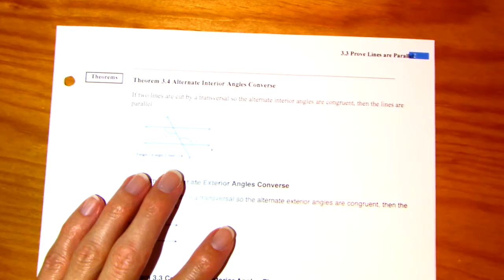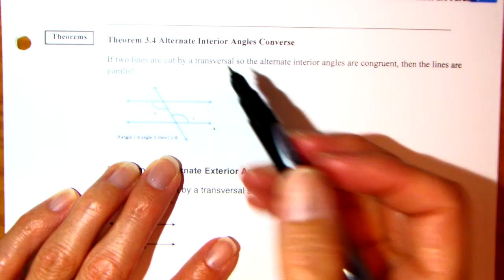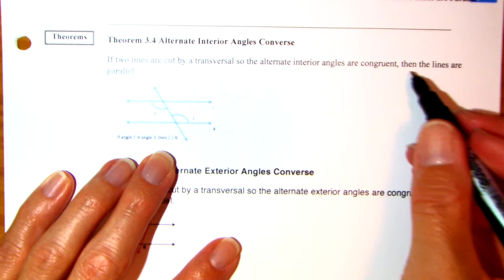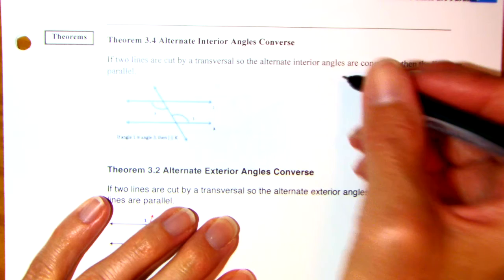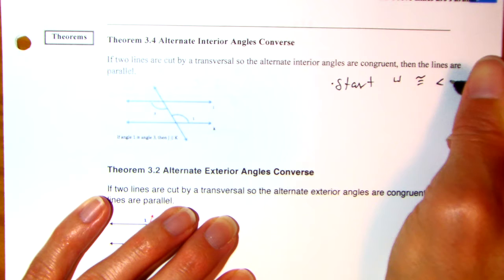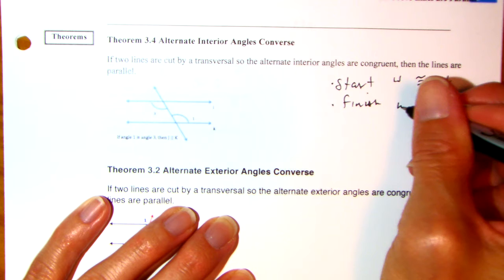More converse theorems. Again, we're going to start with the angles and then prove that the lines are parallel. If two lines are cut by a transversal so that the alternate interior angles are congruent — so we're starting with those — then the lines are parallel. It says if angle 2 is congruent to angle 3, then they're parallel. Start with congruent angles and you're going to finish with parallel lines.